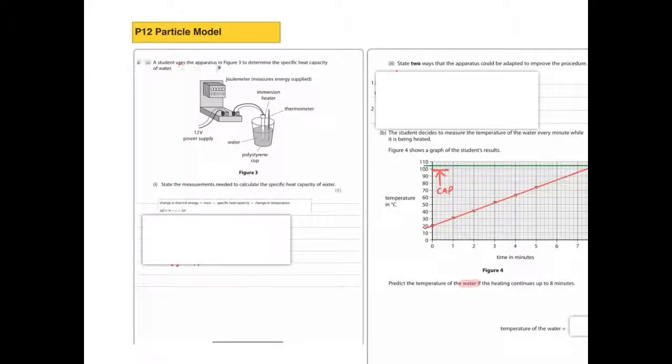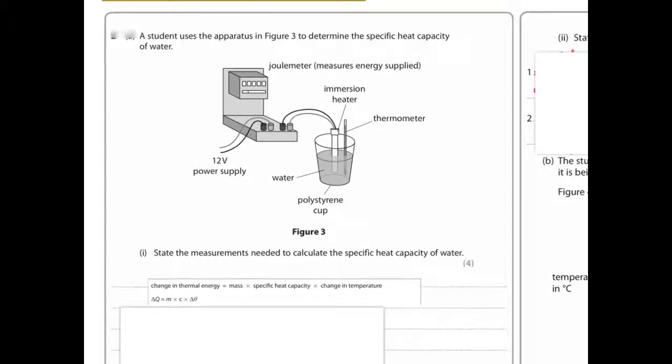A student uses the apparatus in Figure 3 to determine the specific heat capacity of water. So let's just have a look at this equipment. We've got a power supply, an immersion heater so that will heat up the water, a thermometer, and obviously a polystyrene insulation, insulatory cup.